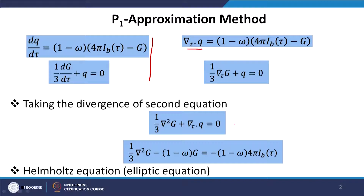Since these are 2 coupled partial differential equations when solving in complex geometry, we eliminate q by taking the divergence of the second equation. We get (1/3)∇²G + ∇·q = 0, then substitute ∇·q from the first equation. This gives (1/3)∇²G − (1 − ω)G = −(1 − ω)4π i_b. This equation is called the Helmholtz equation. It is an elliptic equation that can be solved numerically very easily.